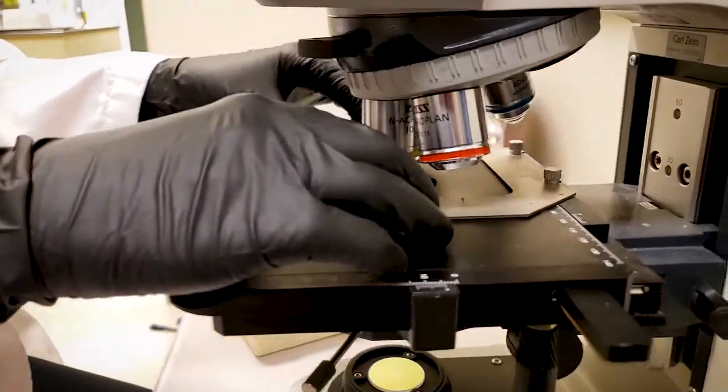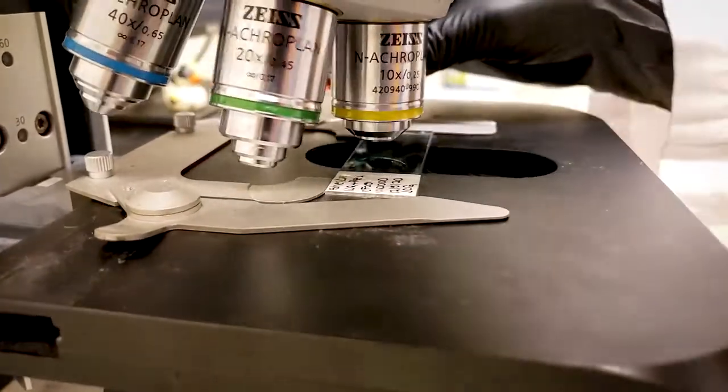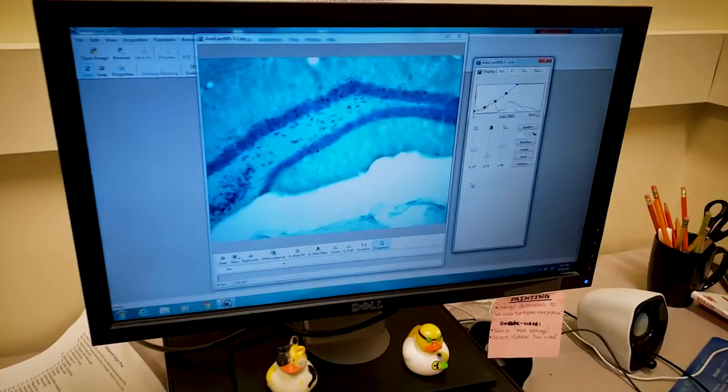Here in the Rhodes Lab, we have three light microscopes. These allow us to image tissue at various magnifications so that we can quantify cell numbers and areas of different brain regions.